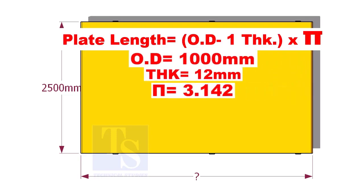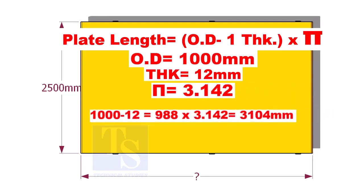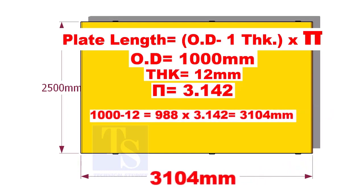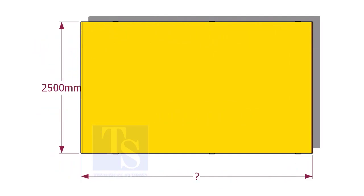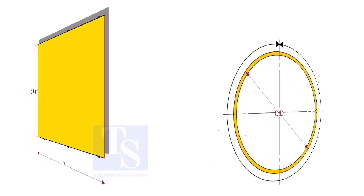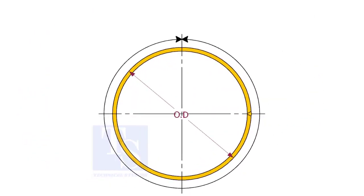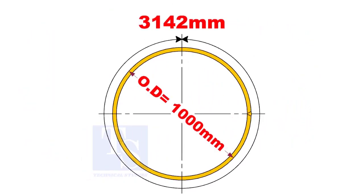1000 minus 12 is equal to 988 mm, multiplied by 3.142 is equal to 3104 mm. If you mark this length on a 12 mm thick plate, after rolling the plate, the outer diameter will be 1000 mm and the circumference will be 3142 mm.